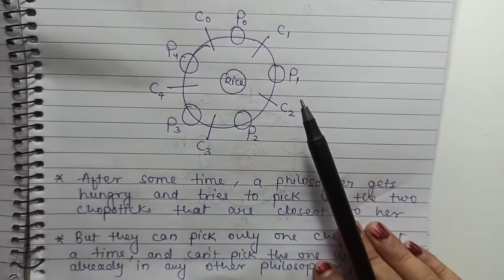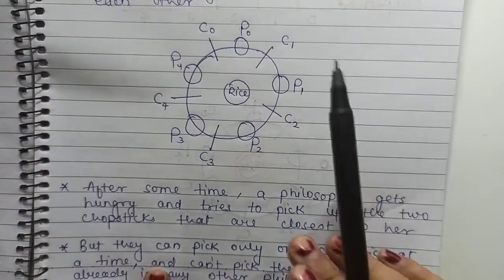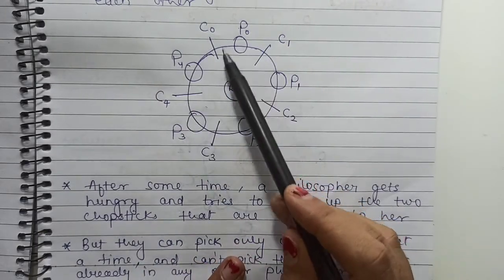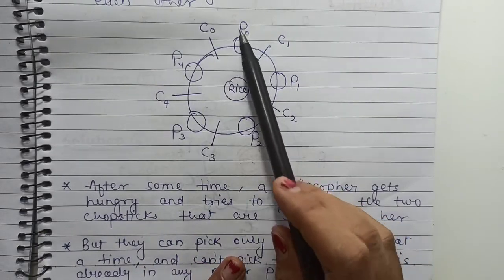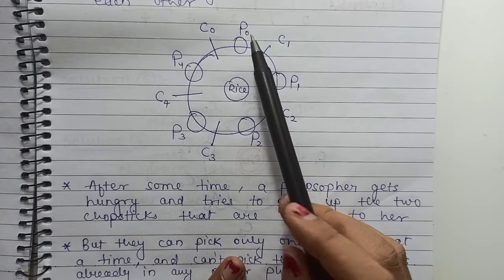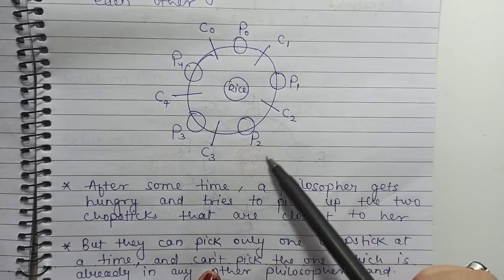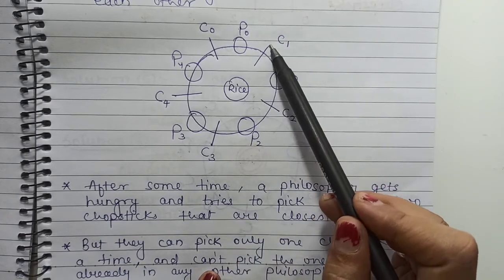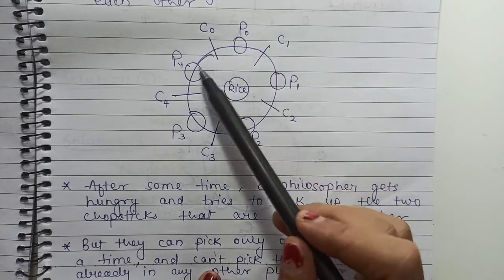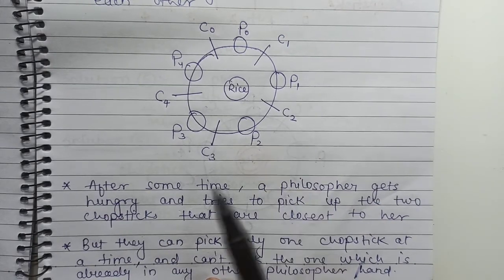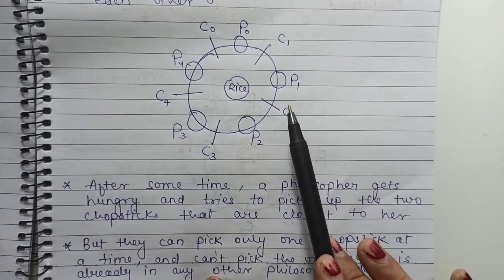Each philosopher shares a common circular table, and this circular table is surrounded by five chairs. Each chair belongs to one philosopher. In the center of the table, there is a rice bowl, and the table is laid with five single chopsticks. When a philosopher thinks, it does not interact with anyone.